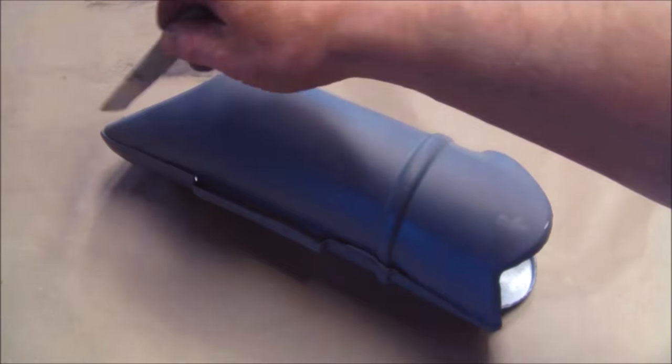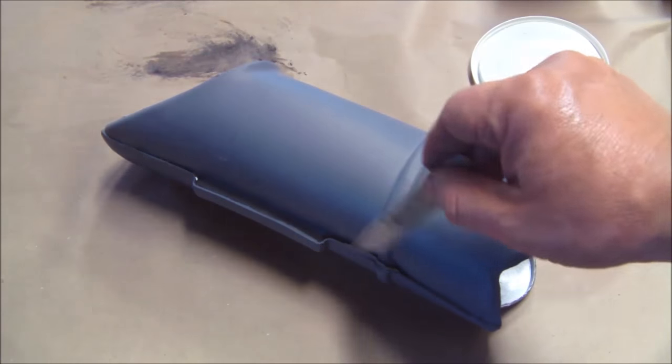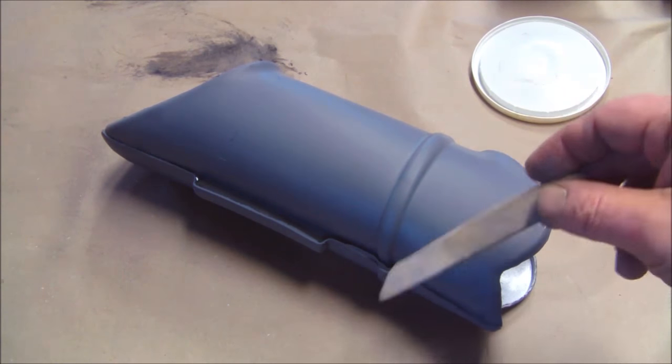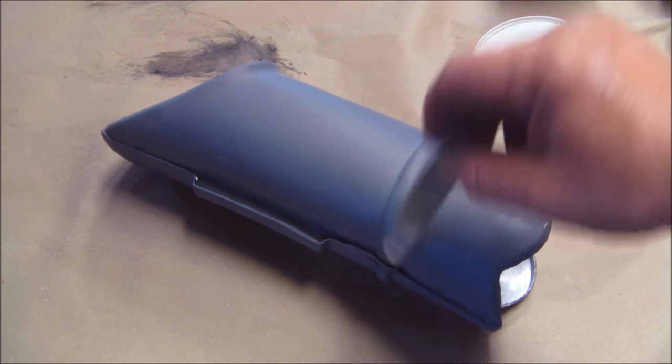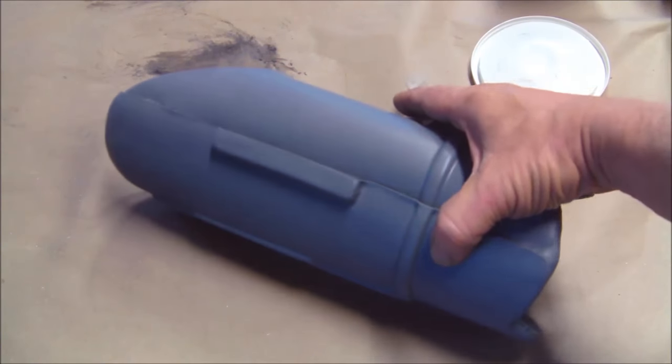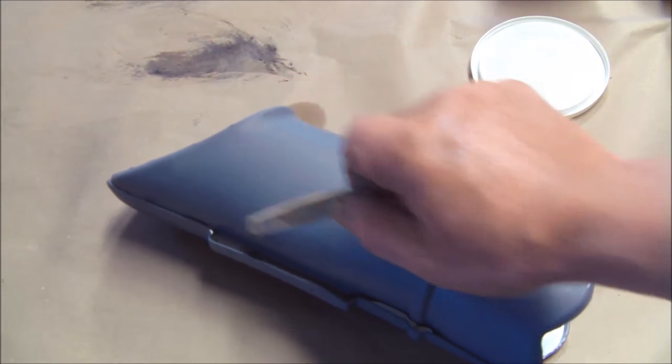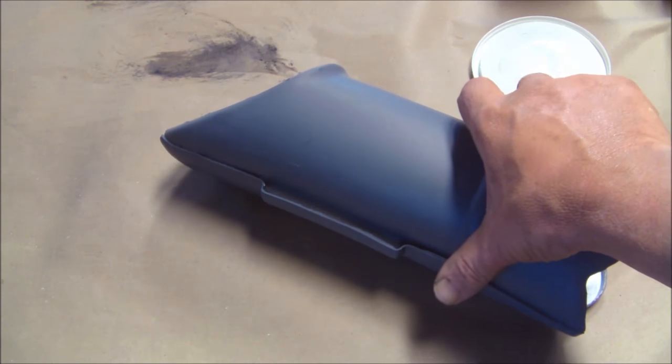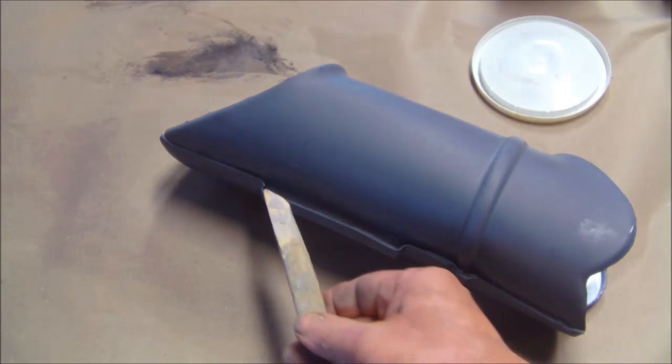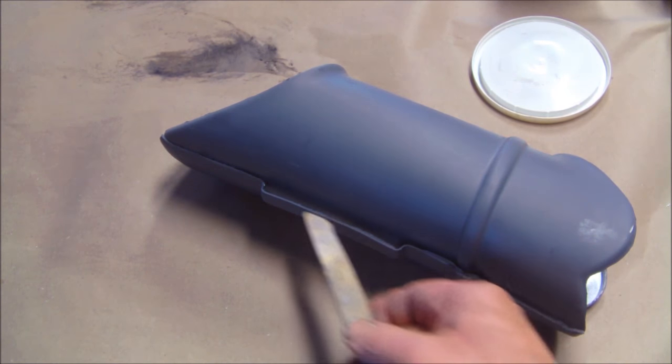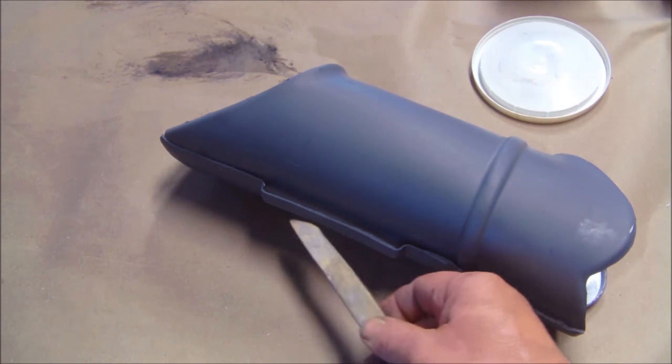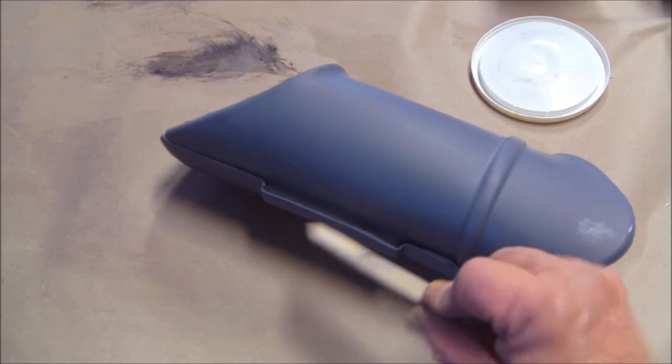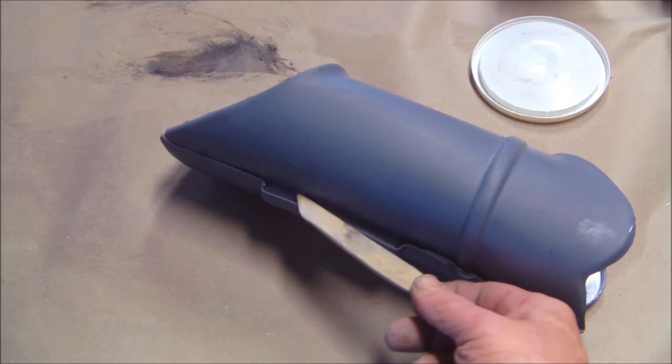At this point you can come in and cover the seam line with Bondo. Now I'm not going to do that for this build. But if you really wanted to go crazy, you could smooth this out. But I am going to just concentrate on filling this area in. This is where the piston is going to be attaching here. I want this to be solid.